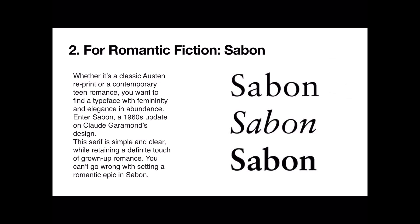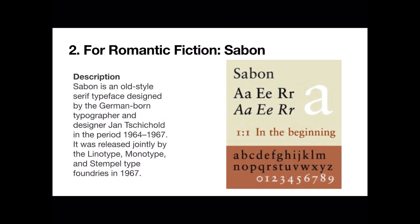You can't go wrong with setting a romantic epic in Sabon. It's an old style serif typeface designed by the German-born typographer and designer Jan Tschichold in the period 1964 to 1967, and it was released by a number of foundries in '67. You can see on that page it's a very clear, very readable font.